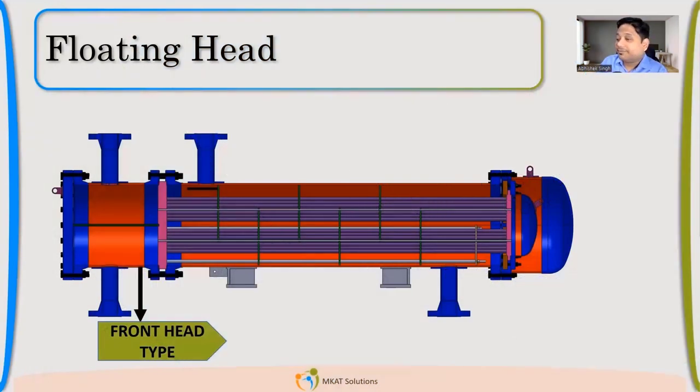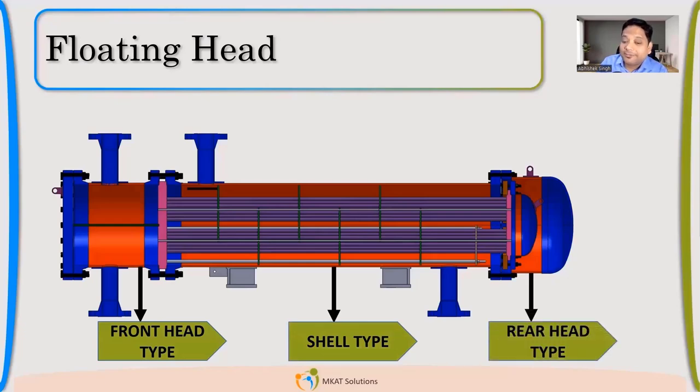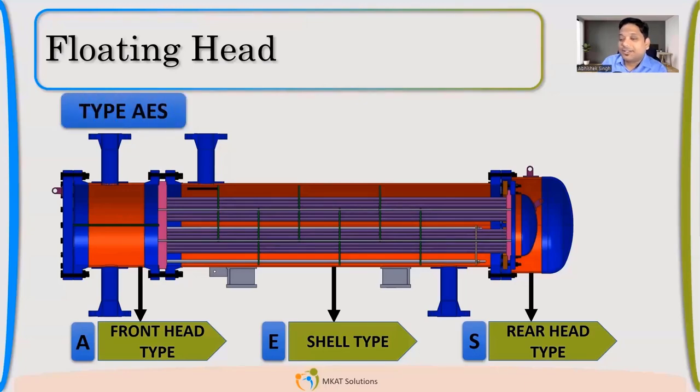If we just take the nomenclature part, like how we combinedly give the name for these kind of heat exchangers. On the left hand side, you have front head. In the middle, we have shell. In the right hand side, we have rear end. Now you tell me, what is the front head type? So front end type is A. What is the shell type? E. What is the rear end? S. The nomenclature for this heat exchanger, we can give as AES. Very simple.